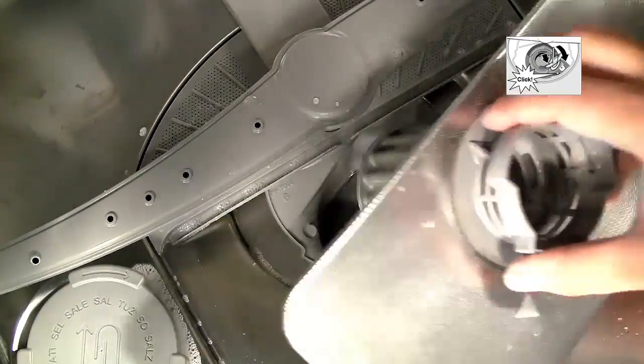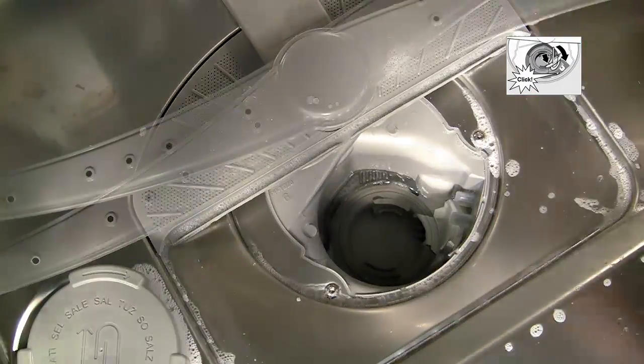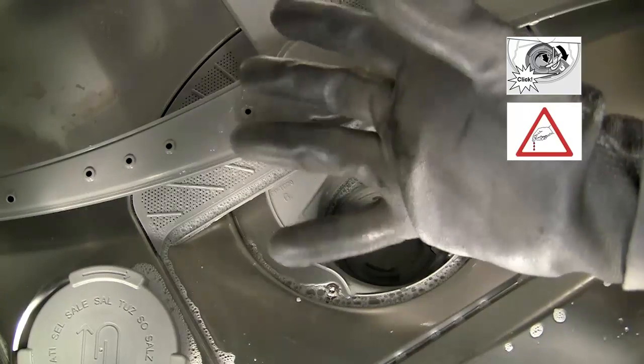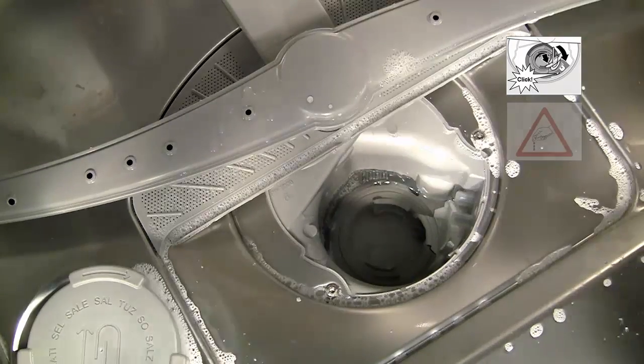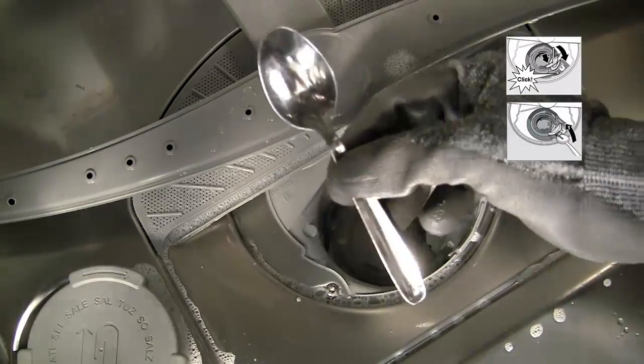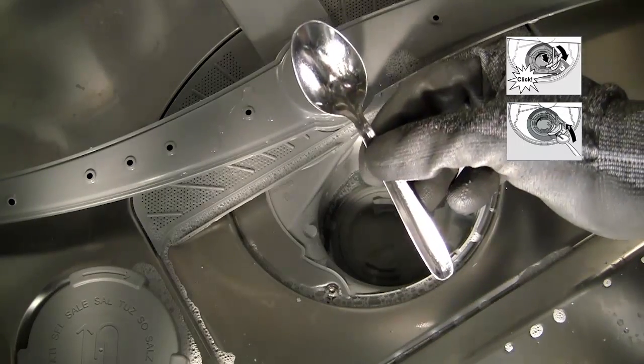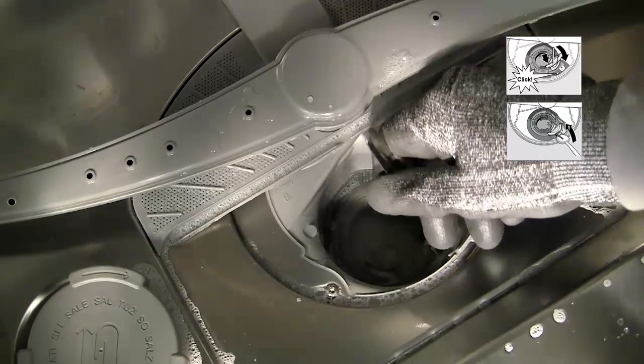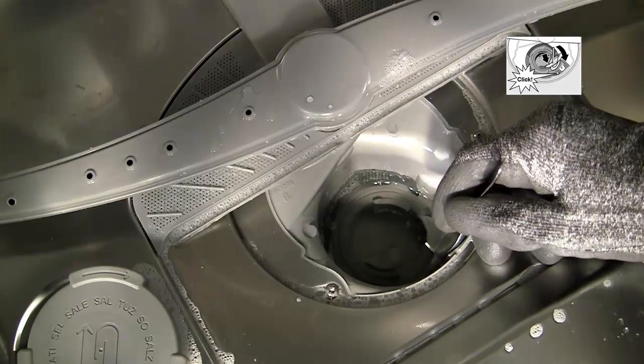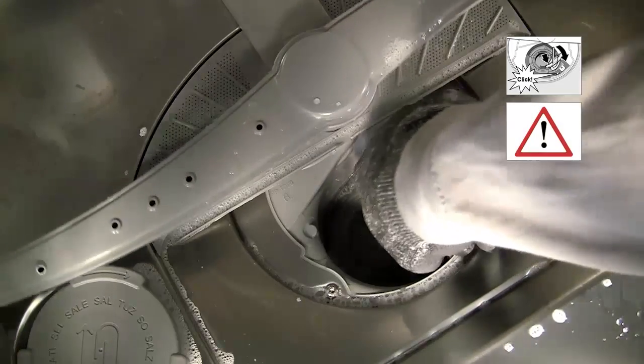Unscrew and remove the filter unit from the base of the dishwasher. Please use protective gloves as sharp objects such as glass fragments can collect in the pump area. Use a teaspoon to unclip the pump cover, pull it out, and lift it away.